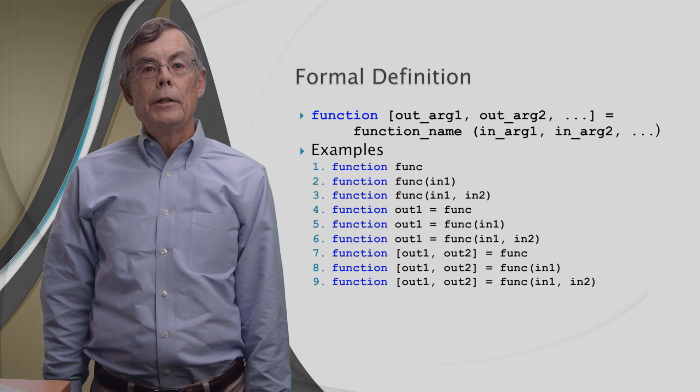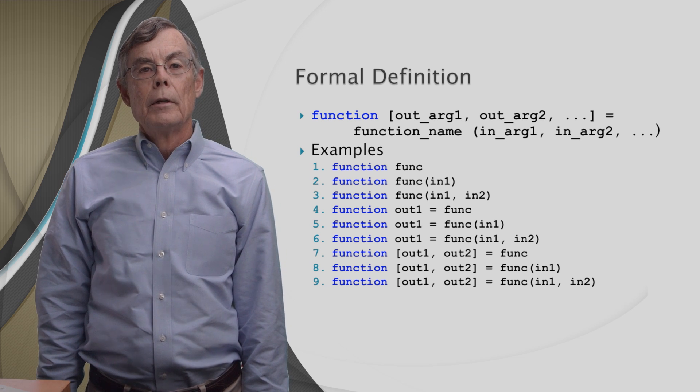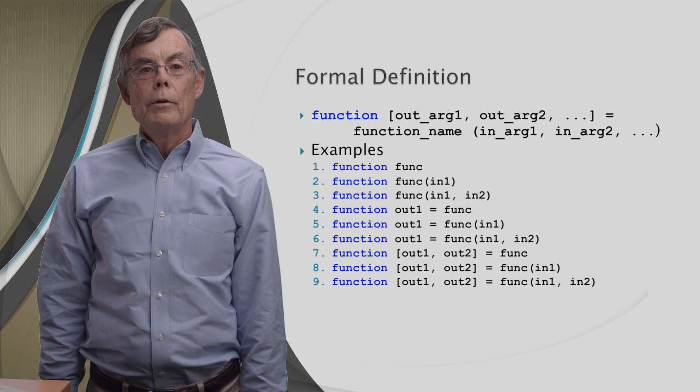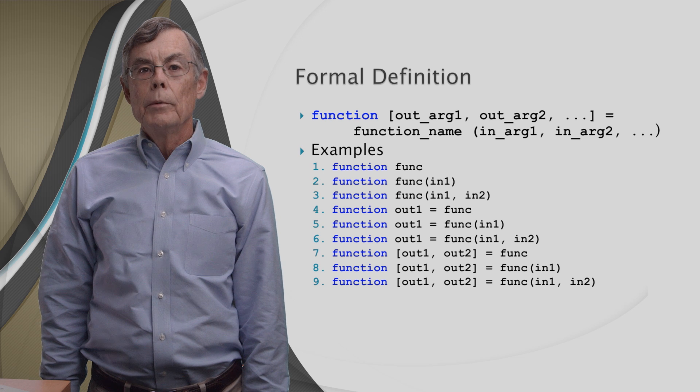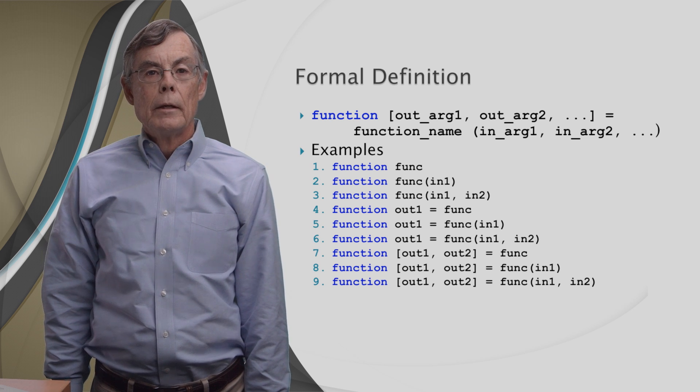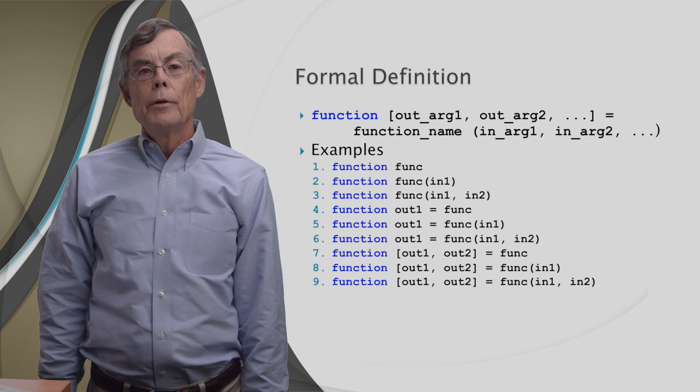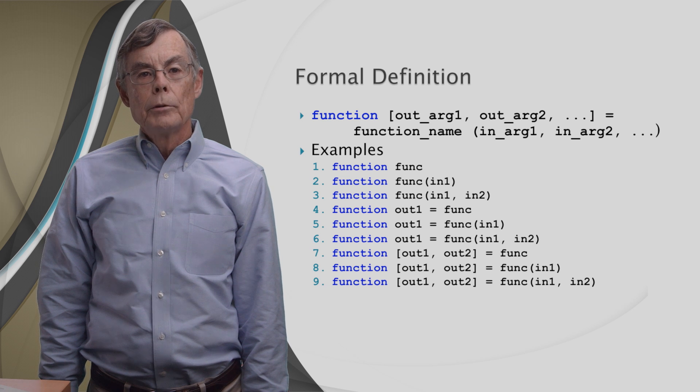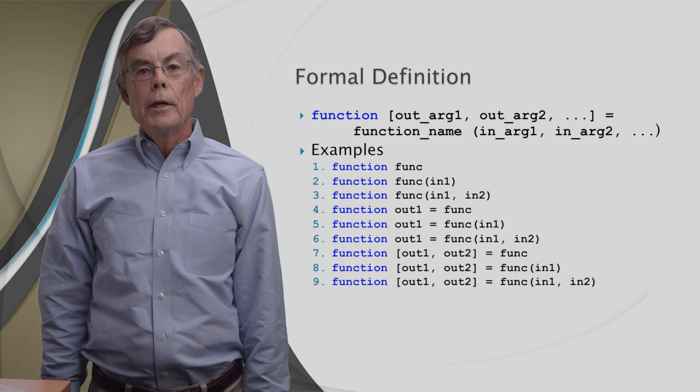In fact, here are all nine possibilities. Starting with the case in which there are no output and no input arguments, in example one. And ending with the case in which there are multiple output arguments and multiple input arguments, in example nine.